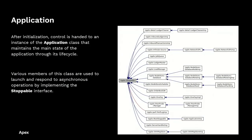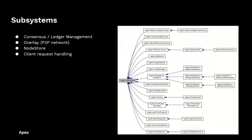After initialization, control is handed off to the application class, which is responsible for maintaining the state of the application through its lifecycle. Various members of this class are instantiated and these are responsible for governing the various subsystems which constitute the XRPL. Many of these derive from the stoppable interface, which allows the application to be stopped in a controlled manner when the administrator executes the command. Now we're going to go into these various subsystems in the next slides.